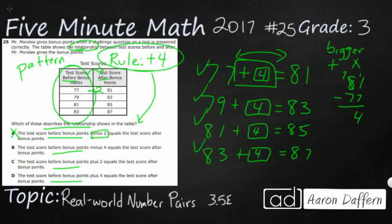The test score before bonus minus 4 equals the test score after bonus. Now we've got minus 4. The 4 works, so let's not be too hasty. But 79 minus 4 gets you a smaller number, not a larger number. So it's not going to be the minuses.